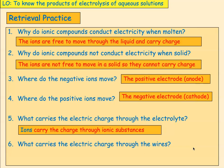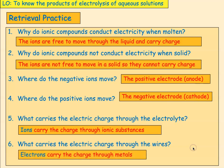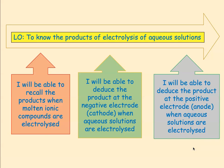What carries the electric charge through the wires? Through wires, we've got a metal, so we've got those delocalised electrons carrying the charge through the metal. We want to be able to know the products of electrolysis of aqueous solutions. We're going to recall what happens with molten ionic compounds when they're electrolyzed, then look at rules to predict the product at the negative electrode for aqueous solutions, and then look at the positive electrode, the anode.